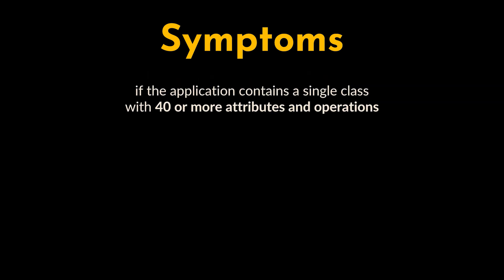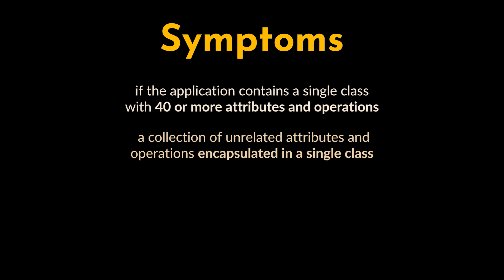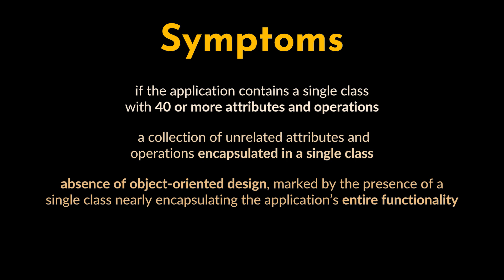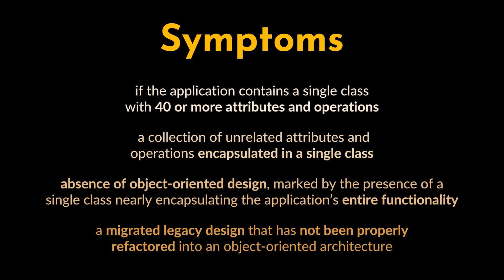Now that we know what a God Class is, let's see how we can identify this anti-pattern — what are the symptoms we should be looking for? If the application contains a single class with 40 or more attributes and operations, this indicates the presence of the God Class. Other symptoms include a collection of unrelated attributes and operations encapsulated in a single class, an absence of object-oriented design where a single class nearly encapsulates the application's entire functionality much like a procedural main program, or a migrated legacy design that has not been properly refactored into an object-oriented architecture.